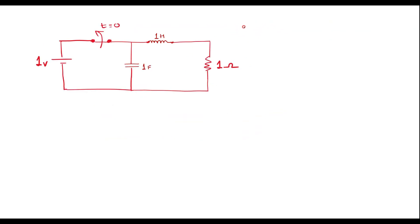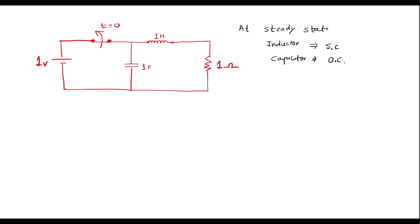Now let me consider the circuit at steady state — that is, before the switching operation. At steady state, inductor acts like short circuit and capacitor acts like open circuit. So I will short the inductor, and since the capacitor acts like open circuit, this branch is open. The current will flow only in the 1 ohm resistor — this is the closed path.